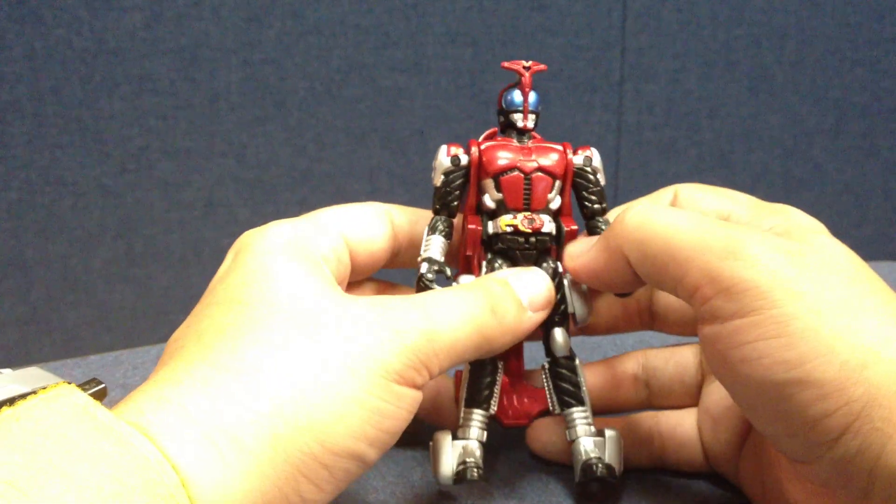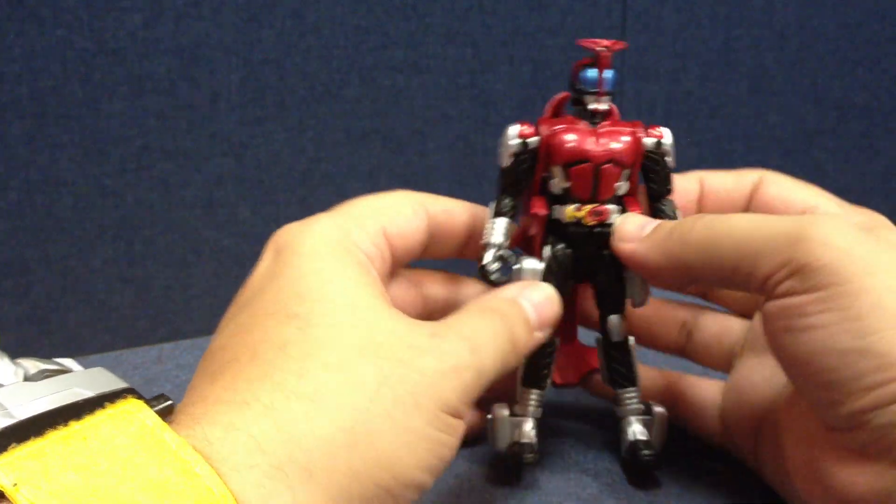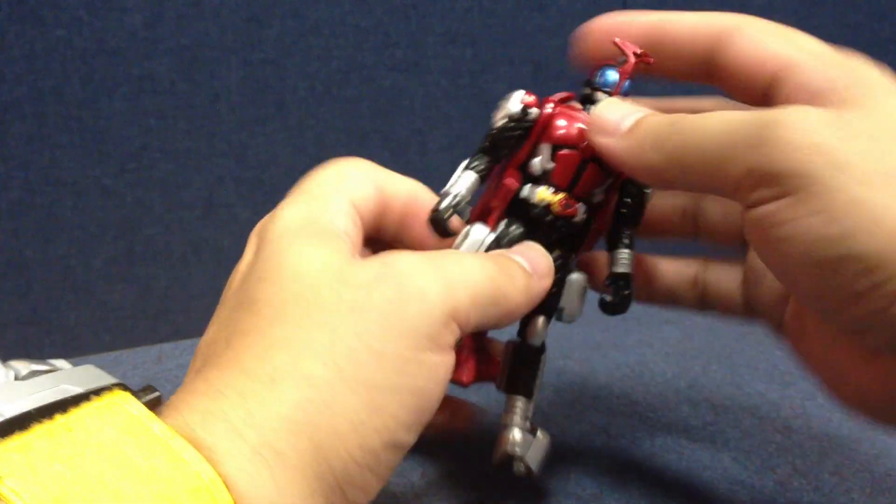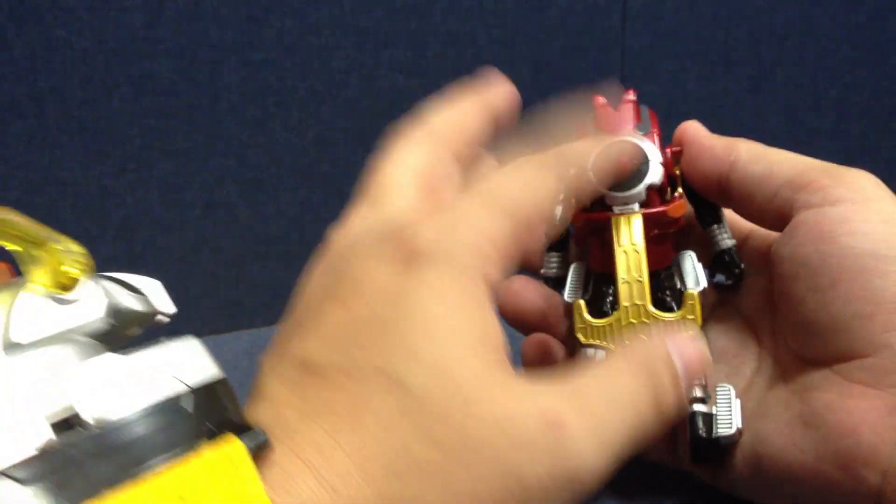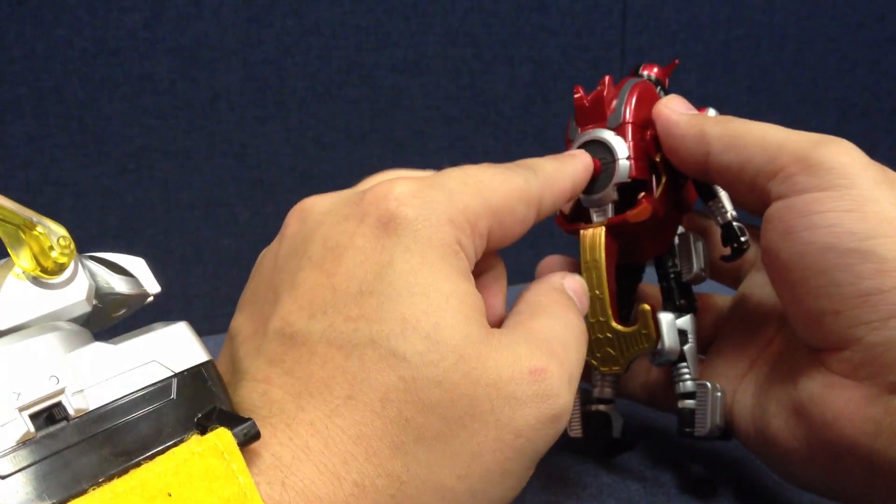But anyway, I've watched Kabuto, and this is just a neat little Transformer Kabuto figure. That's why I bought it. And basically, he just turns into his Zector that Decade can ride around on his little board. It plugs in right here.